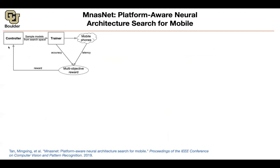We are going to have the same structure as before. There is going to be a controller proposing architectures to us. We're going to sample architectures from the controller, train them — that's going to give us some accuracy. Then you take the trained model, put it in your device. You don't look at your FLOPs or memory consumption in a theoretical way; you're actually putting it into practice on your target platform, and from that target platform you're going to get the latency. So now you have two numbers: accuracy and latency, and then you can do multi-objective reward.